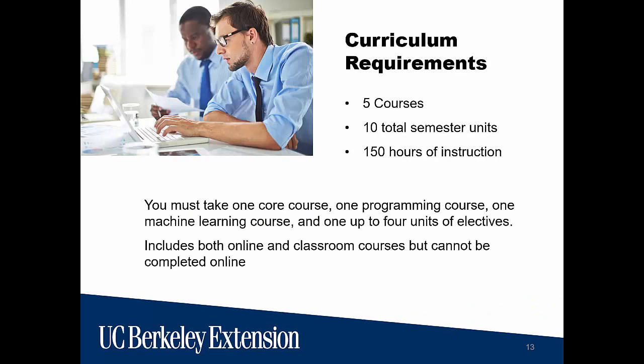The certificate consists of 10 semester units, equivalent to 150 hours of instruction. You'll need to complete a total of five courses. You may take one programming course, one machine learning course, one core course, and up to four units of electives. The program includes both online and classroom courses, and it is not normally possible to complete the program completely online. However, because of COVID disruptions, all classroom classes will be held live online for the fall term and likely the upcoming spring term, so the program is still possible to complete fully online in the near term.